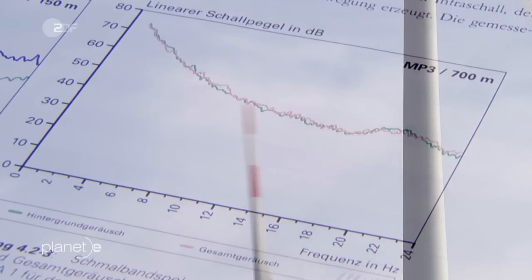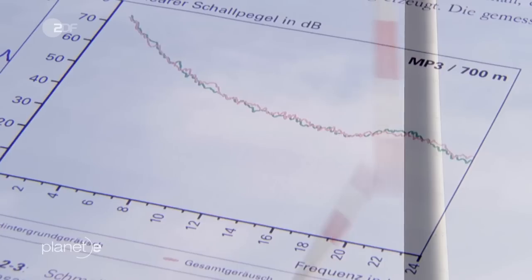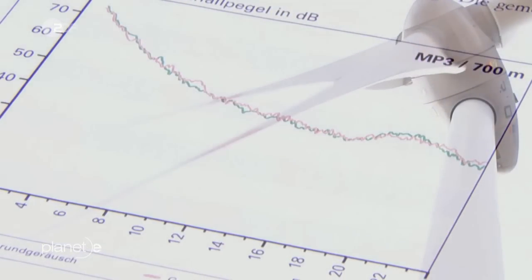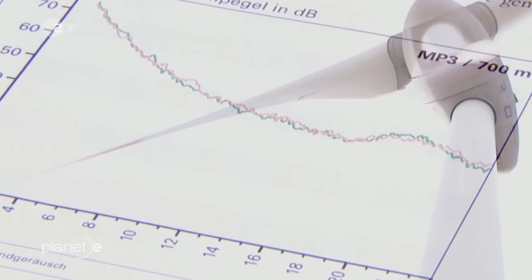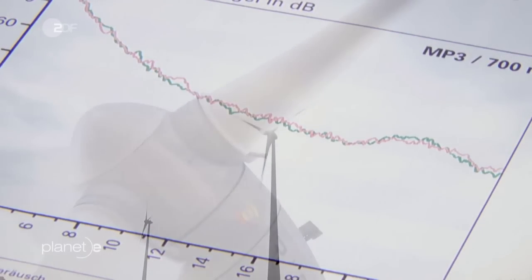This is what the situation looks like in chart form. From a distance of 700 metres, the infrasound from wind farms, shown here in red, can no longer be distinguished from the infrasound of the background noise, shown in green. The red graph has no peaks, no upward deflections.